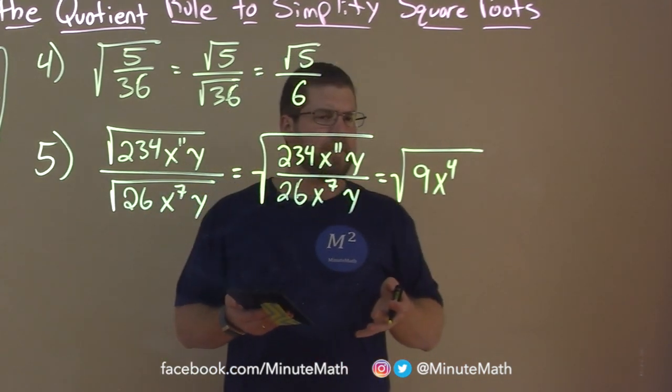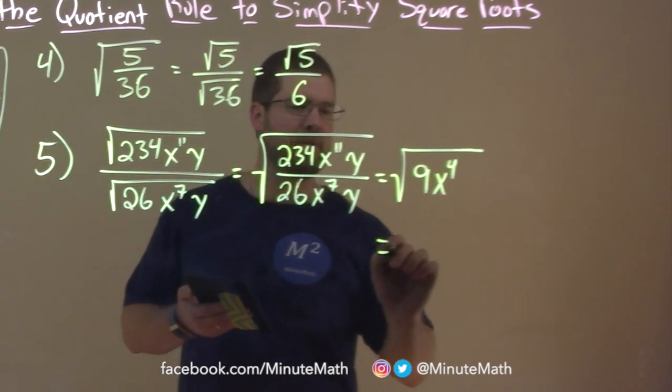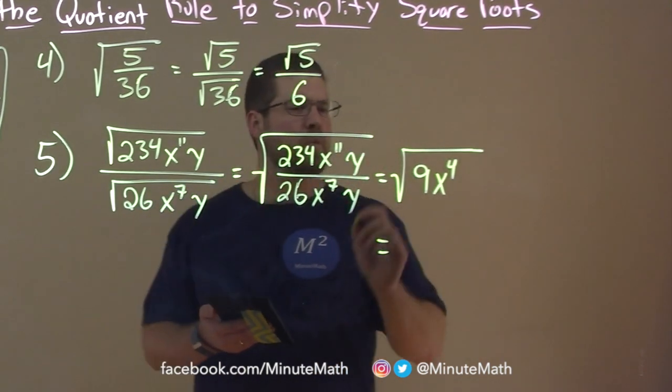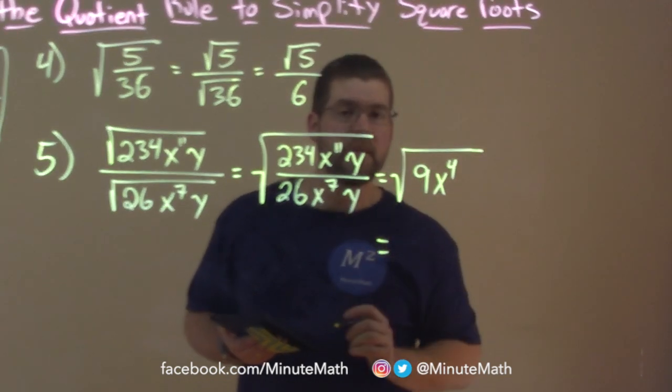But we're not done. We have the square root of 9 x to the 4th, and we can simplify that even more. The square root of 9 here, well, or remember from before, we can do the square root of each number individually.